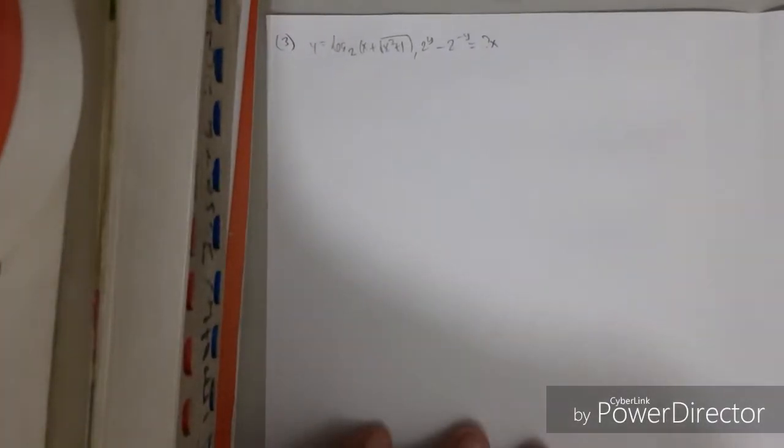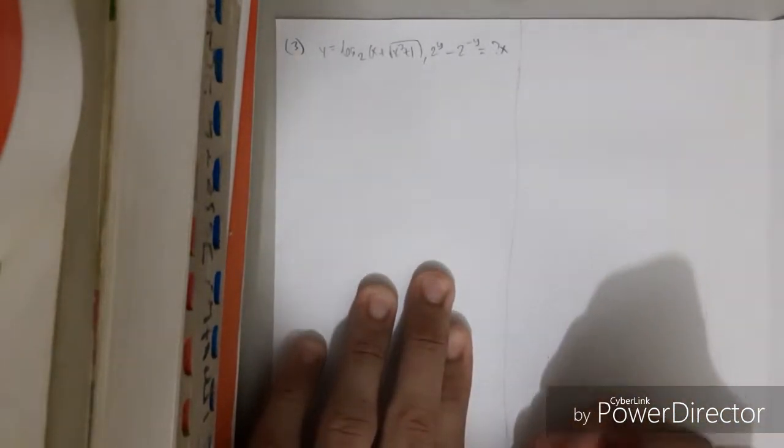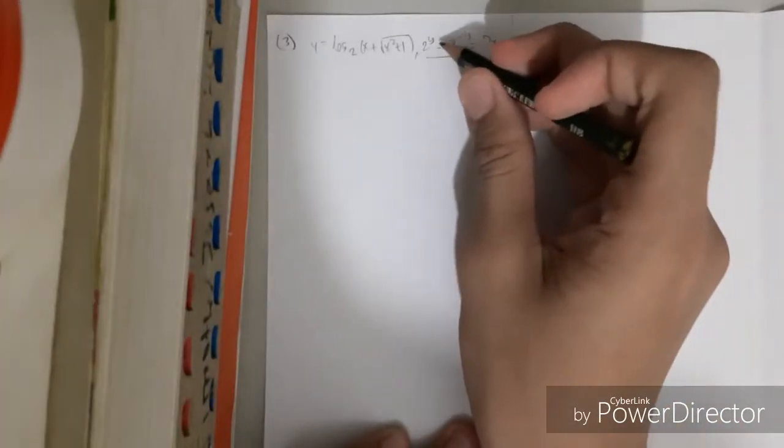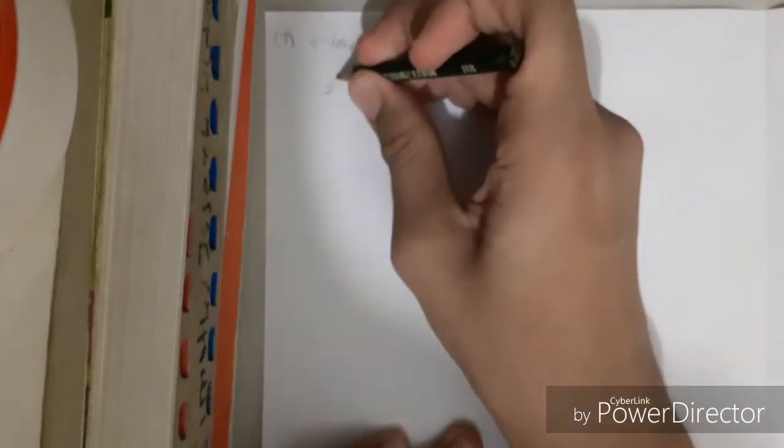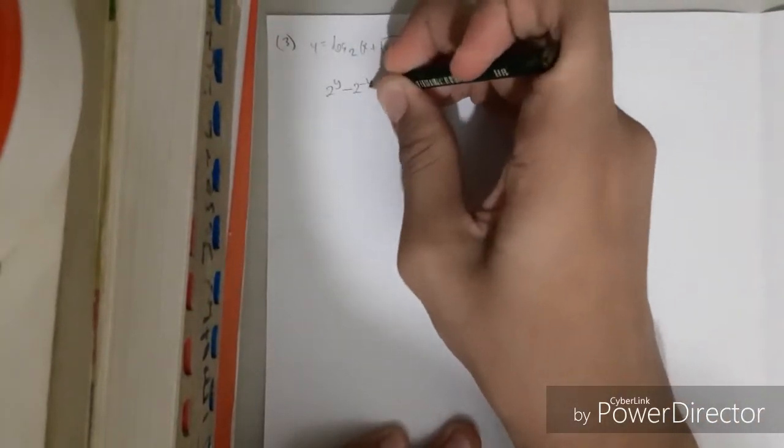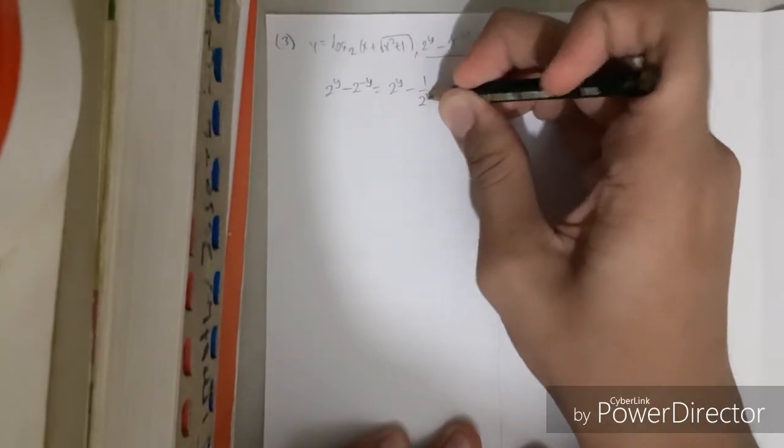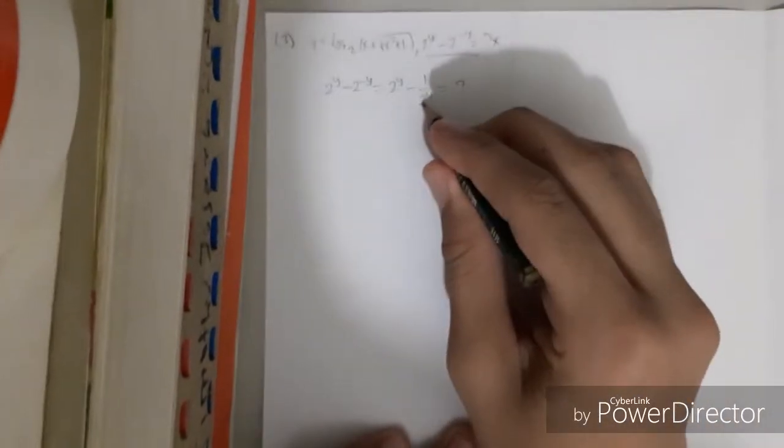But we should be aware of it. Let's draw a line here. What I do first is assemble 2 to the power of y and minus 2 to the power of negative y. This could be equal to this one. Now we can...